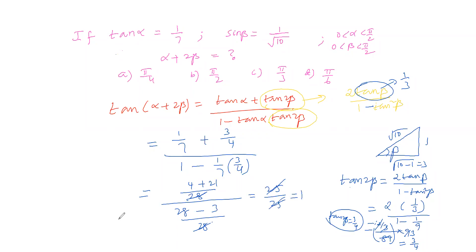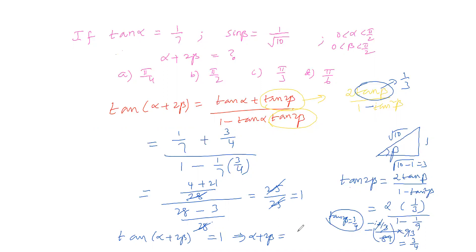Since tan(α + 2β) = 1, and tan 45° = 1, we conclude that α + 2β = 45 degrees, which equals π/4. Therefore the first option, π/4, is correct.